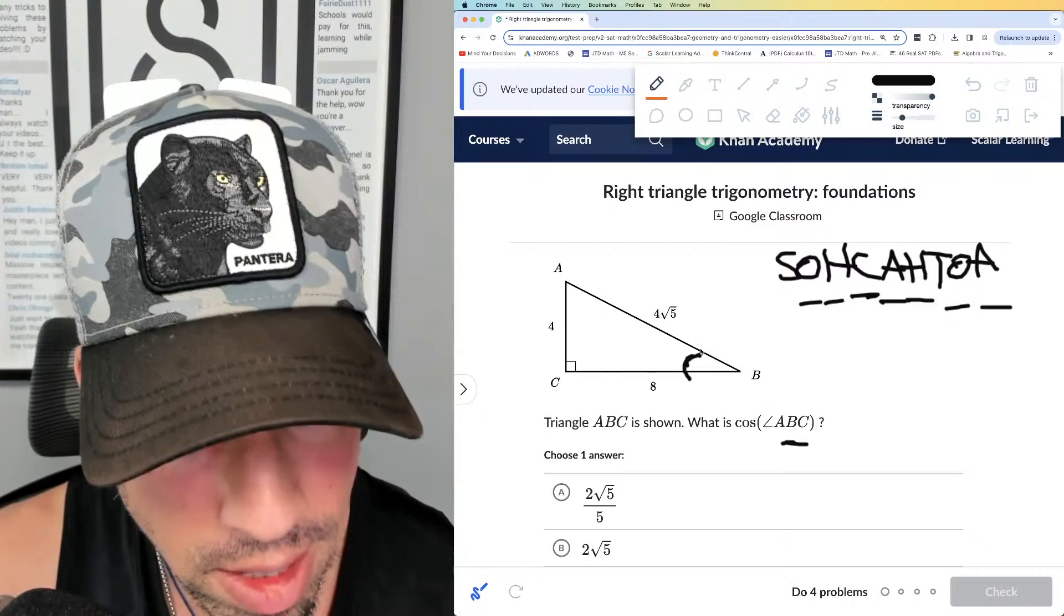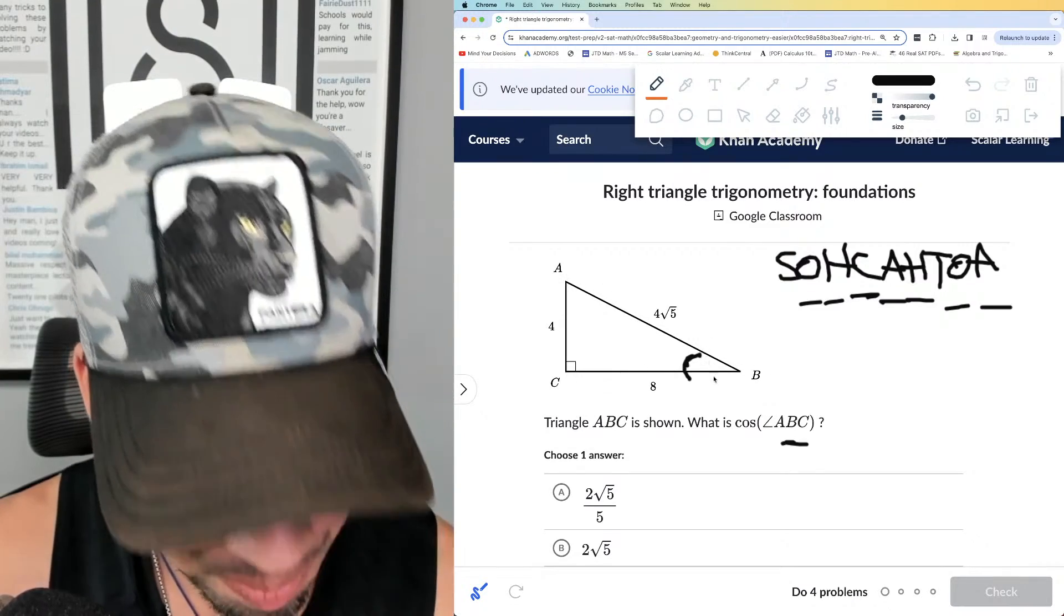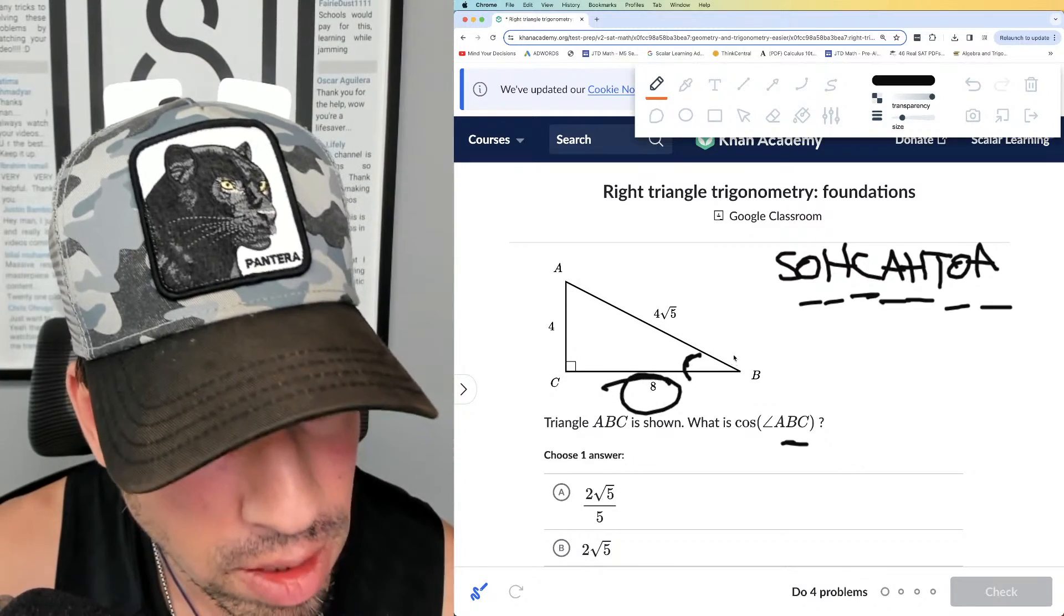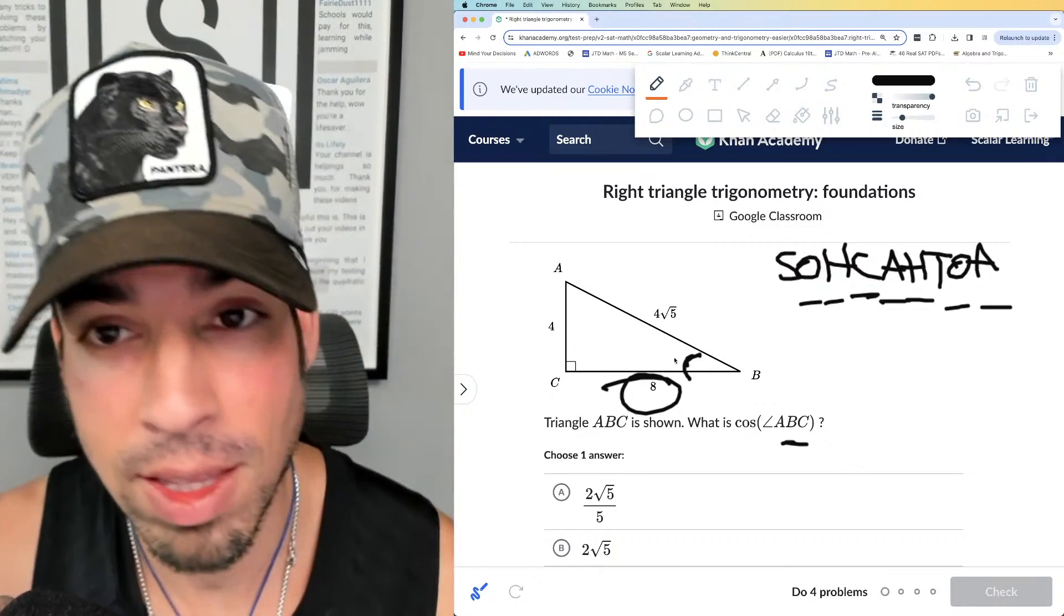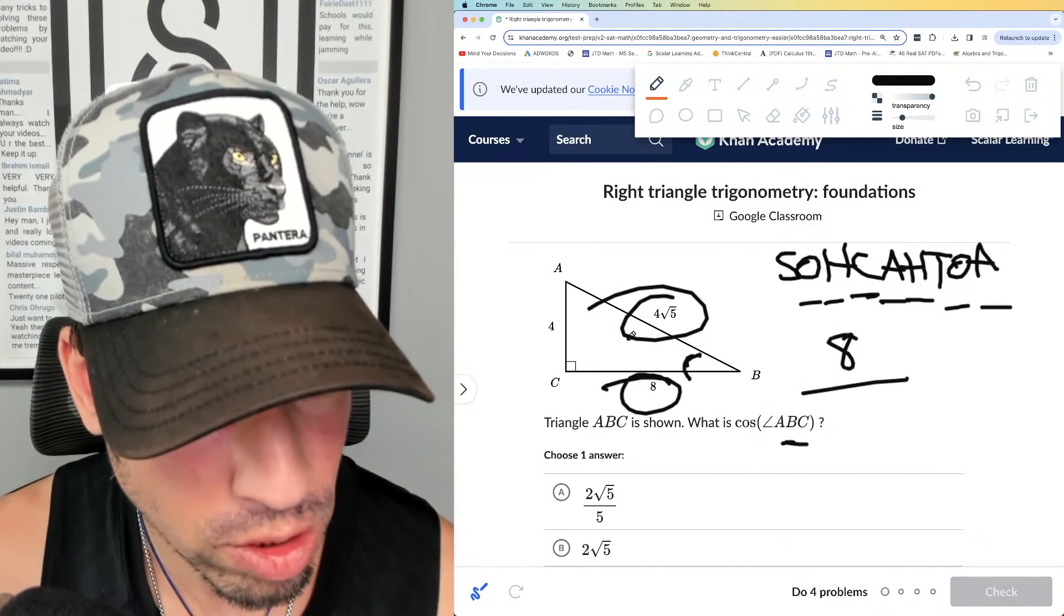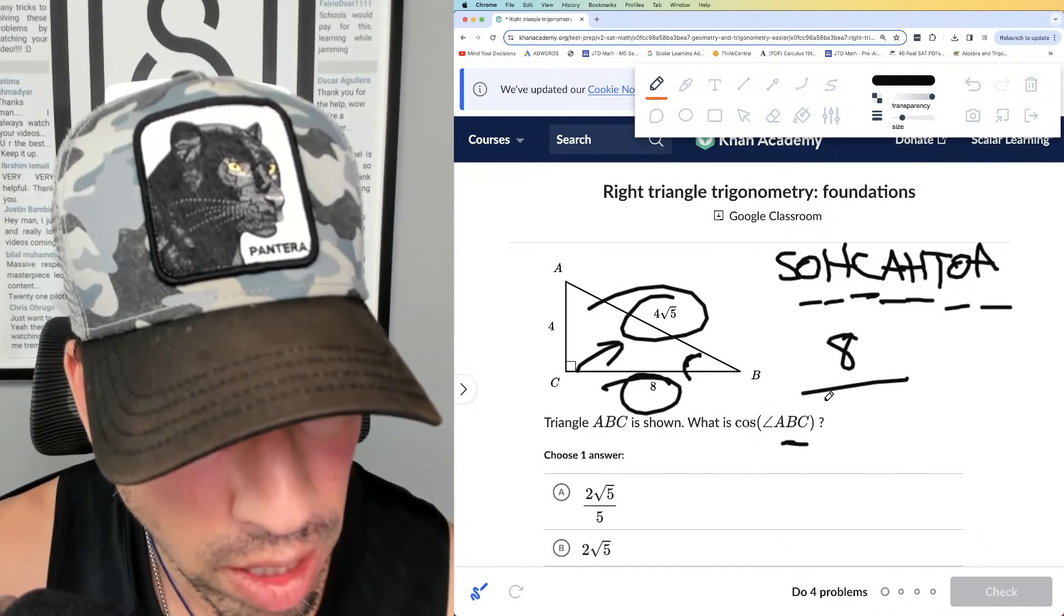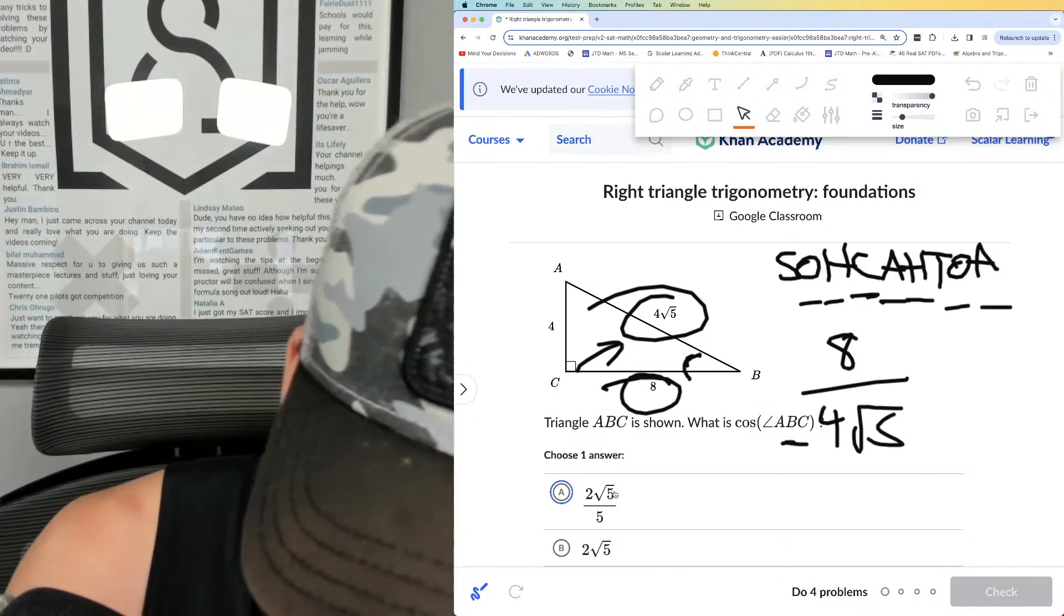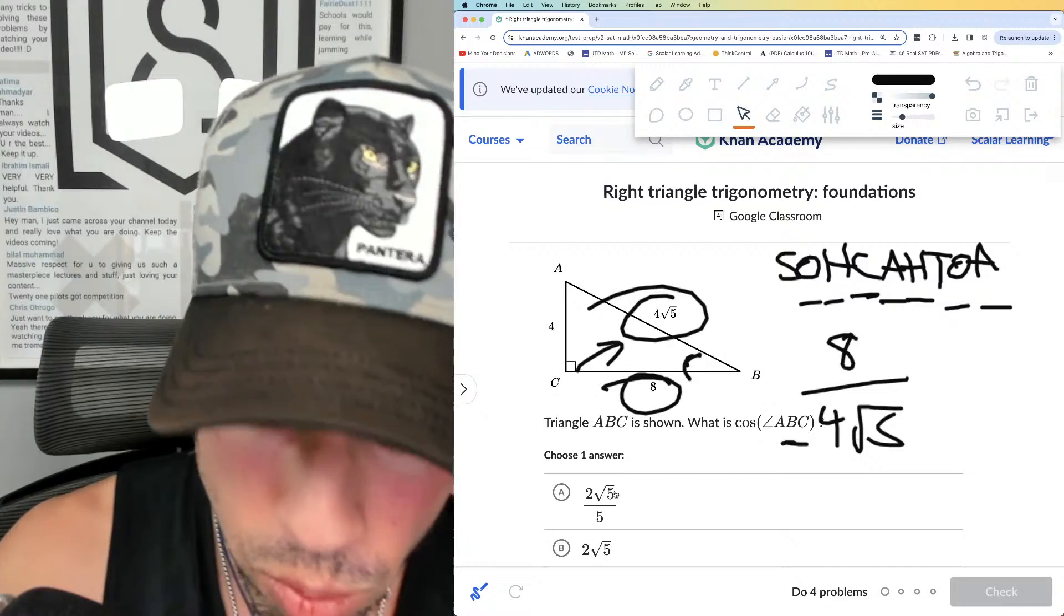If we're doing cosine of angle B, aka angle ABC, that's equal to the adjacent side to B, which is the adjacent leg—eight—over the hypotenuse, which is the longest side opposite the right angle. So it's 8 over 4√5. Now I don't think they have this exact answer here. Yeah, so they don't have this exact answer here.